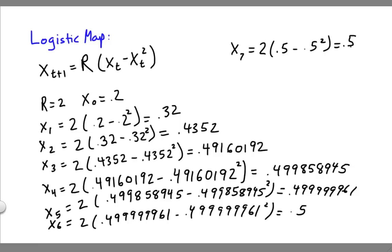And forever after, we'll get 0.5 as our answer. This means that if your growth rate, that is the birth rate minus the death rate, or r, is equal to 2, and you start out at 20% of the carrying capacity, under this model the population will always end up at 50% of the carrying capacity.